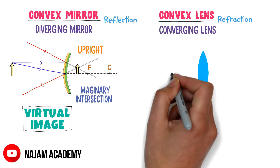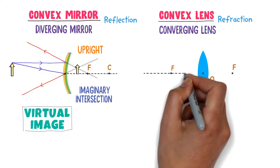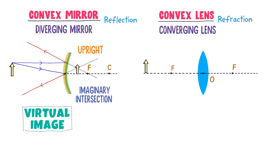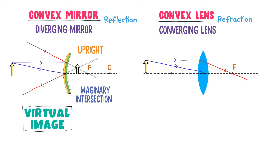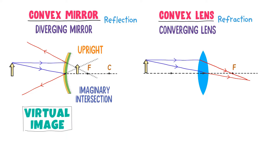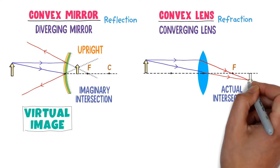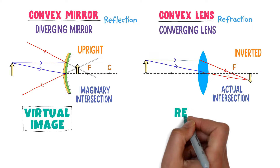Secondly, consider a convex lens. This is the focal point, optical center, and principal axis of the convex lens. A parallel light ray hits the lens and it is refracted at the focal point. Another light ray hits the optical center and it passes straight without any deflection. We can observe that the refracted rays of light intersect at this point. This is actual intersection — a real intersection of light rays. So it will form an inverted image and this image is a real image. Remember that convex mirrors being diverging mirrors form upright and virtual images, while convex lenses being converging lenses form inverted and real images.